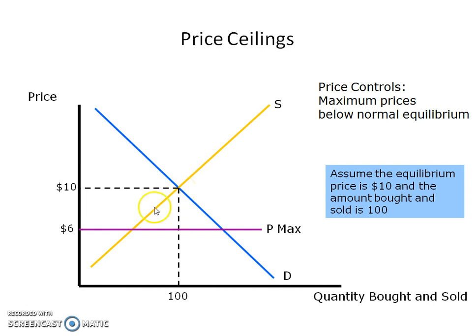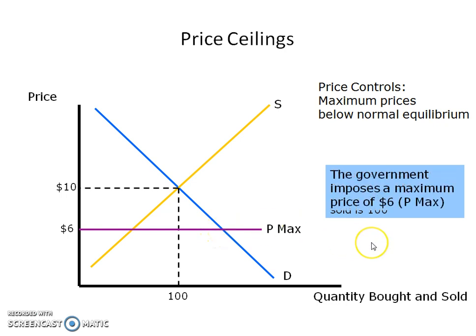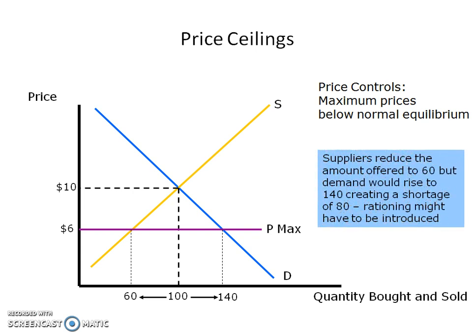At this point, the $6 price crosses the supply curve here and the demand curve here. The result is that we have 60 units of this particular good being produced and 140 being demanded. So we have a shortage of 80 of this particular product, and the result of this shortage will be some upward pressure on price.